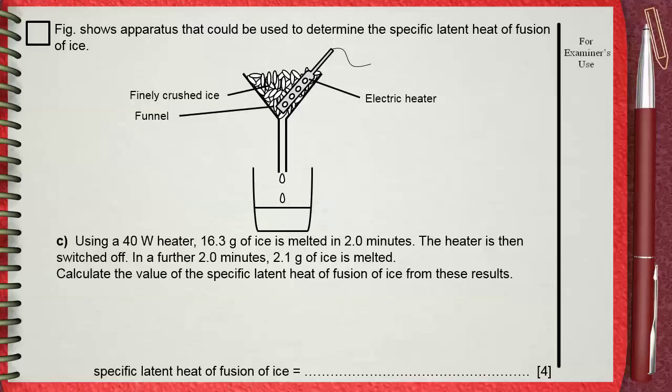So, let's understand what's happening here in this question. You have a 40-watt heater, this is the first given, and this causes 16.3 grams of ice to melt in 2 minutes of time, which is 120 seconds.